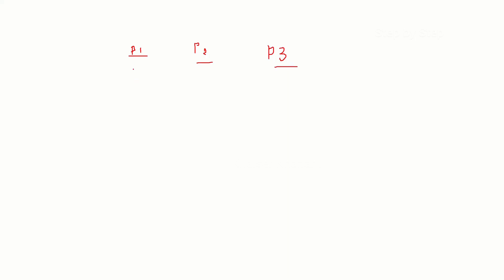I will show you this. This is product one, product two, and product three. For the first product I am having around 3 quantity and the price is around 15,000 — just imagine for one product we are having 5,000, so for three it will be 15,000. Then for product two, quantity is one and the total price is 10,000. And for product three, quantity is two and I am going to give the total price as 2,000 — so for one product the total price will be 1,000. Now what I have to do?